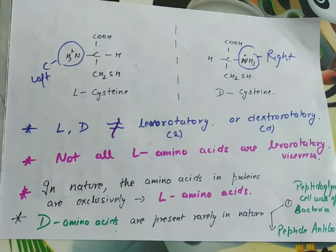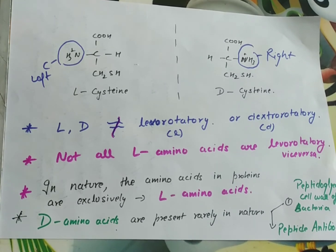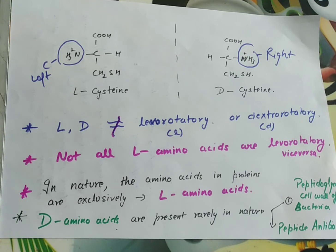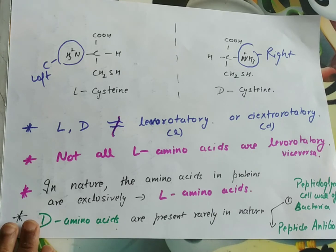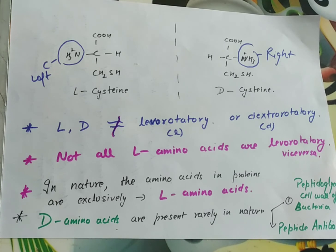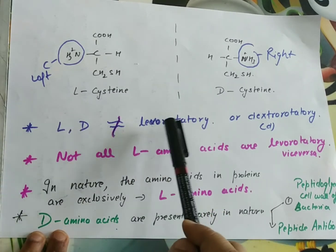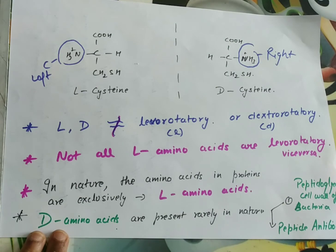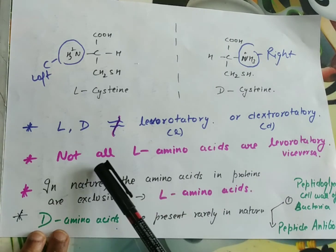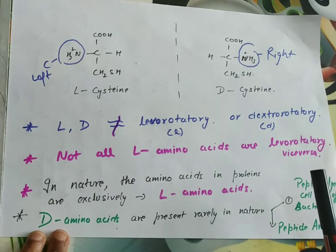It is important to understand that D and L do not mean levo or dextro rotation. Levo means the molecule rotates light to the left; dextro means it rotates light to the right. But D and L in this system do not indicate optical rotation direction — it is not the case that all L amino acids are levorotatory or all D amino acids are dextrorotatory.